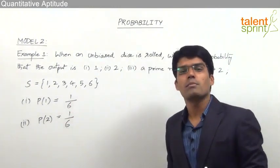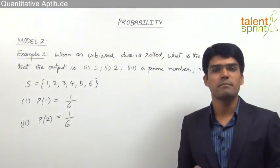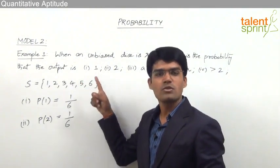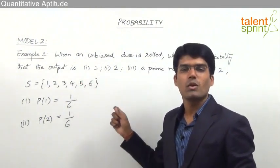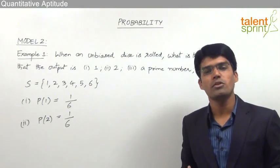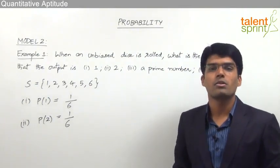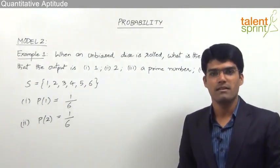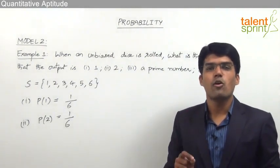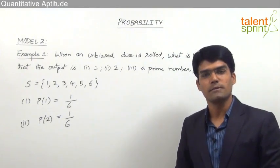For example, what is the probability of getting the output as 4? It should be 1/6, because we can get 4 only in one way — 1 out of 6. Similarly, the probability of output 5 is 1/6, not 5/6. Remember, the numerator in probability is not the output value but the number of ways in which we can get that output.